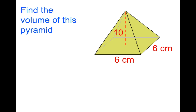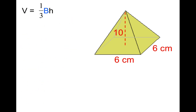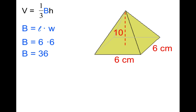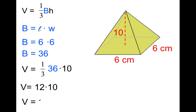Here's an example for you to try — find the volume of this pyramid using V = (1/3) × B × H. Pause the video and attempt this problem. Welcome back. The base is again a square, so B = length × width = six times six = thirty-six square centimeters. Plugging into the volume formula: V = (1/3) × 36 × 10. One-third of thirty-six is twelve, so twelve times ten equals 120 cubic centimeters.